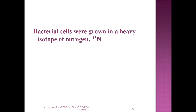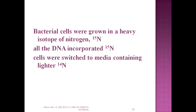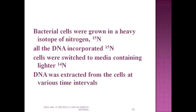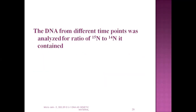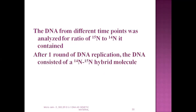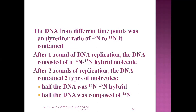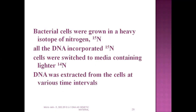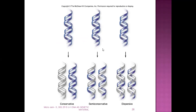Meselson and Stahl investigated the process of replication and considered three different models — semi-conservative, conservative, and dispersive — which were discussed in the previous video lecture. Bacterial cells were grown in heavy isotope N-15 (nitrogen). All the DNA incorporated into cells was then switched to media containing lighter N-14. DNA was extracted from cells at various time intervals and analyzed. After one round of replication, the DNA contained a hybrid of N-14 and N-15, consistent with the semi-conservative model.